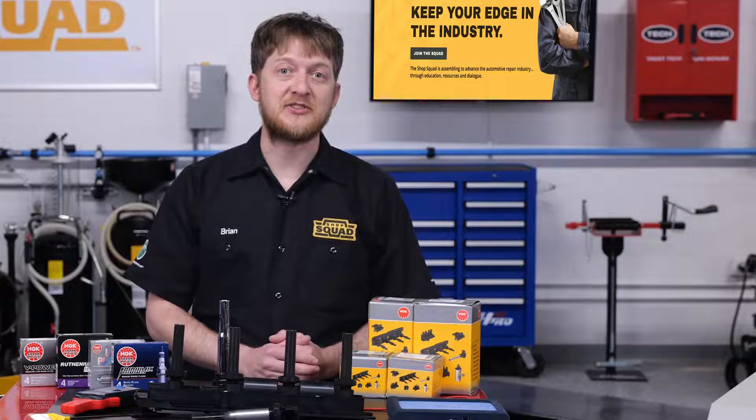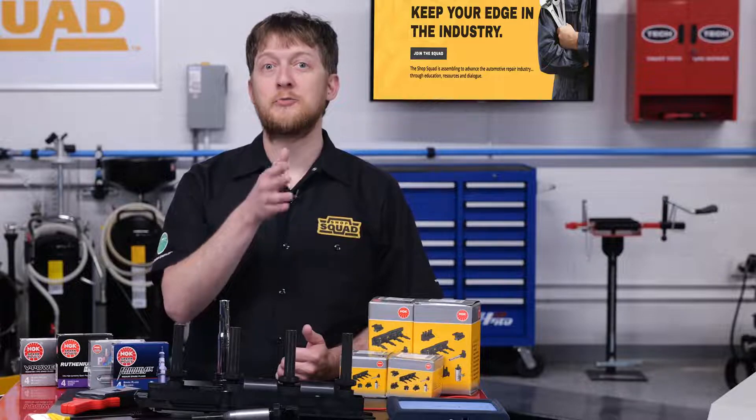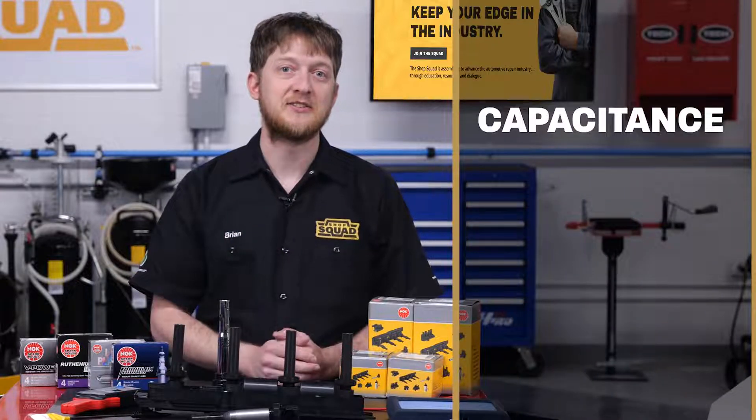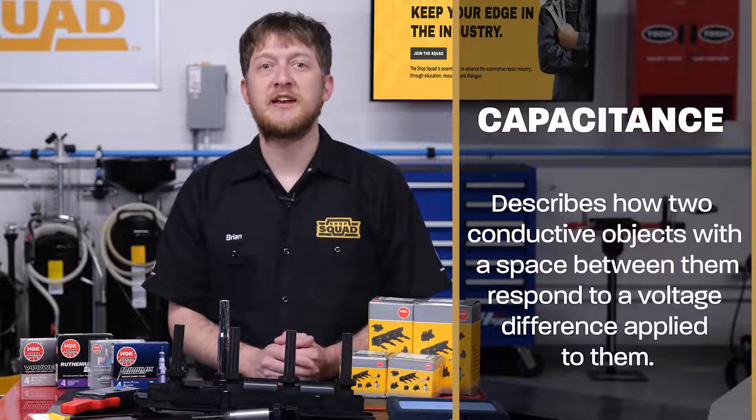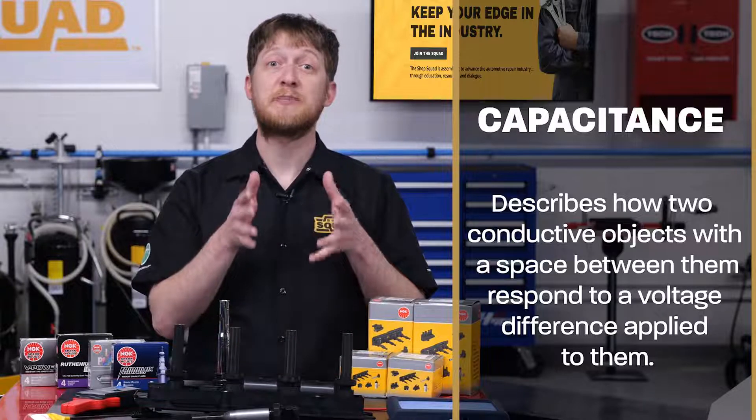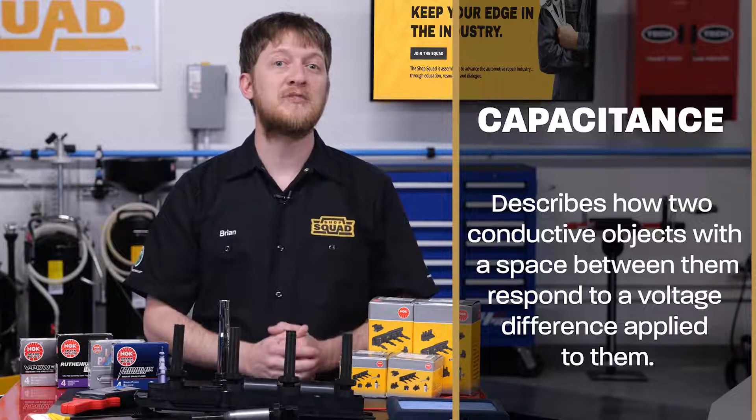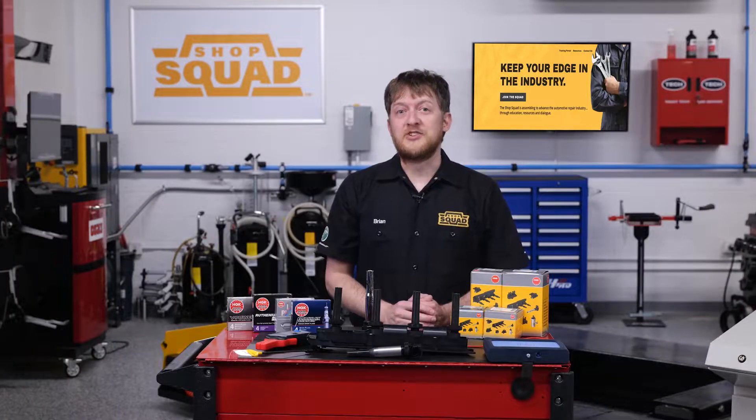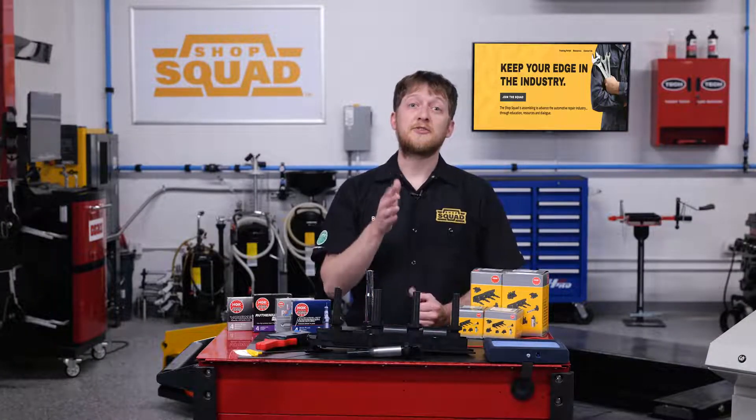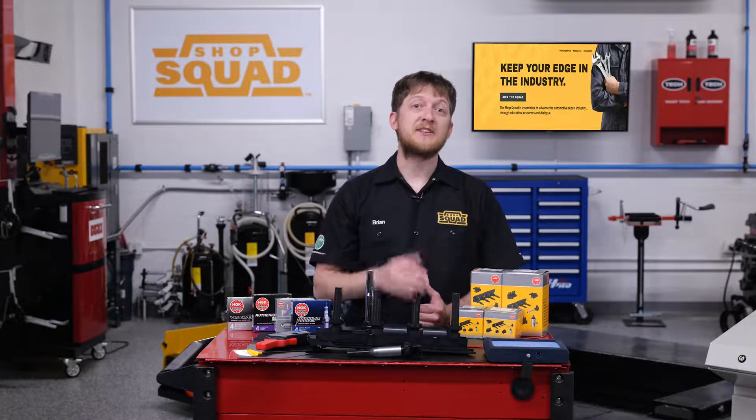Non-contact capacitive sensors measure the changes in an electrical property called capacitance. Capacitance describes how two conductive objects with a space between them respond to a voltage difference applied to them. A voltage applied to the conductors creates an electric field between them, causing positive and negative charges to collect on the probe.